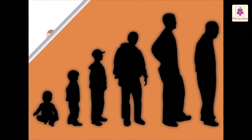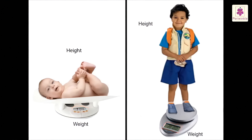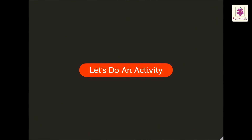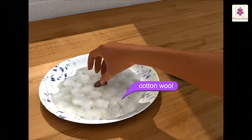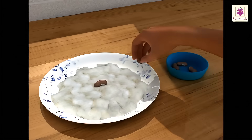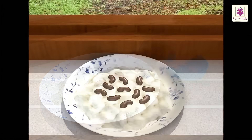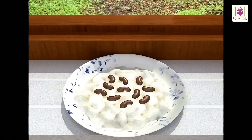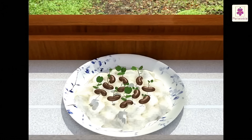Living things grow. All living things grow in shape and size. The weight and height of living things increase as they grow. Let's do an activity to see the growth in plants. Put a few bean seeds on a bed of cotton wool. Make sure that the cotton is damp at all times, but do not overwater. Keep it on a windowsill without covering it. After a week, you will observe that the bean seeds have sprouted and the bean plant grows.